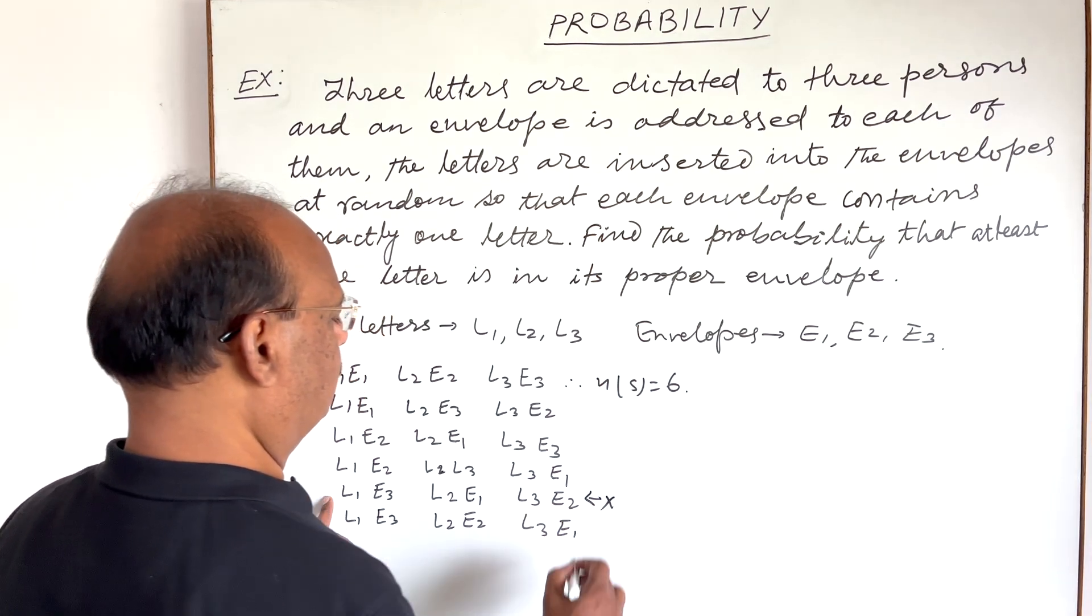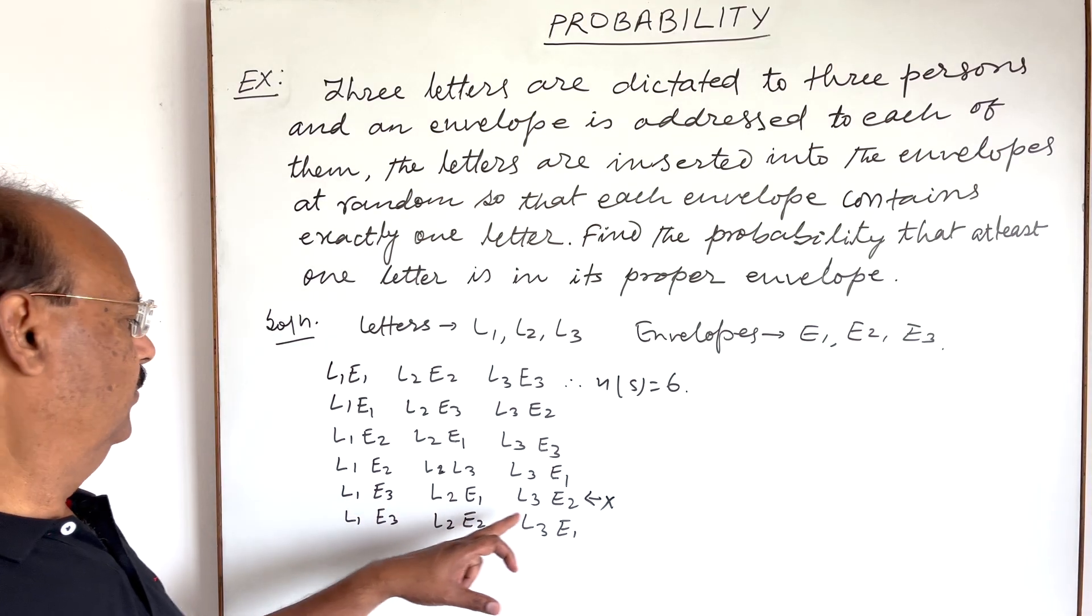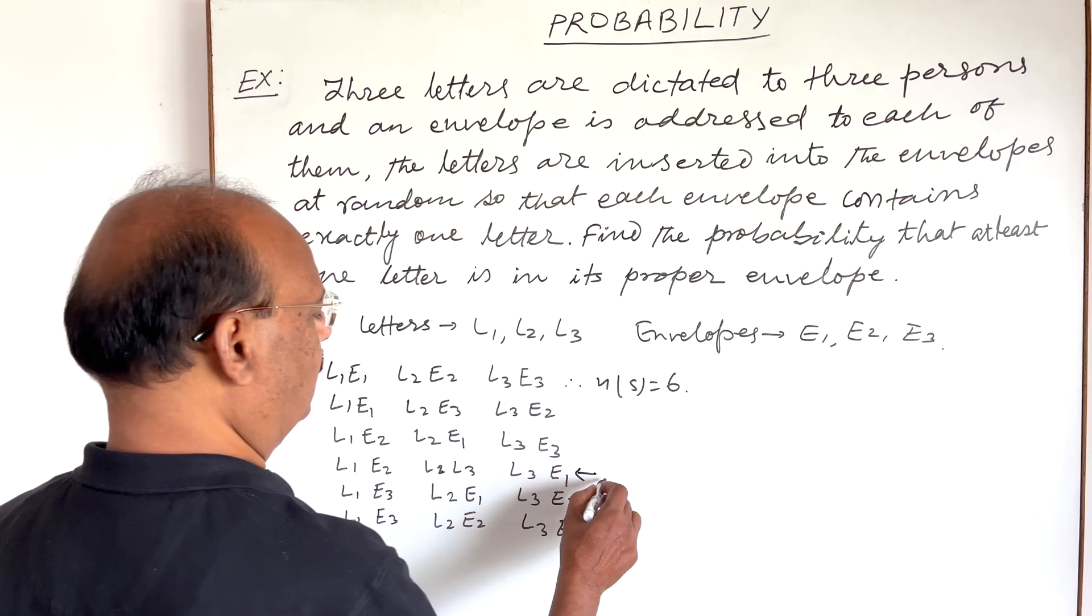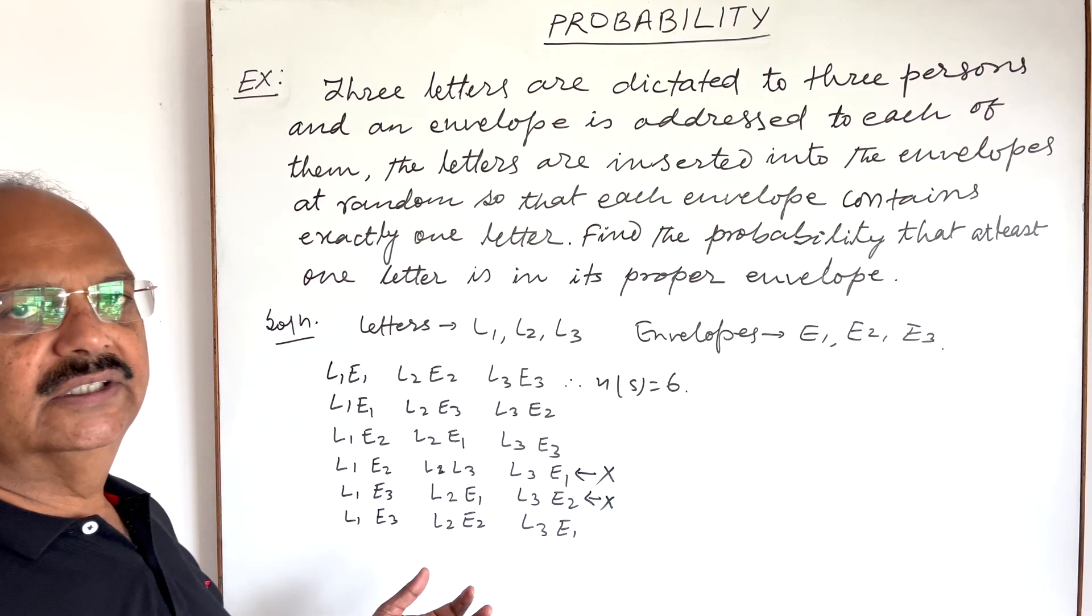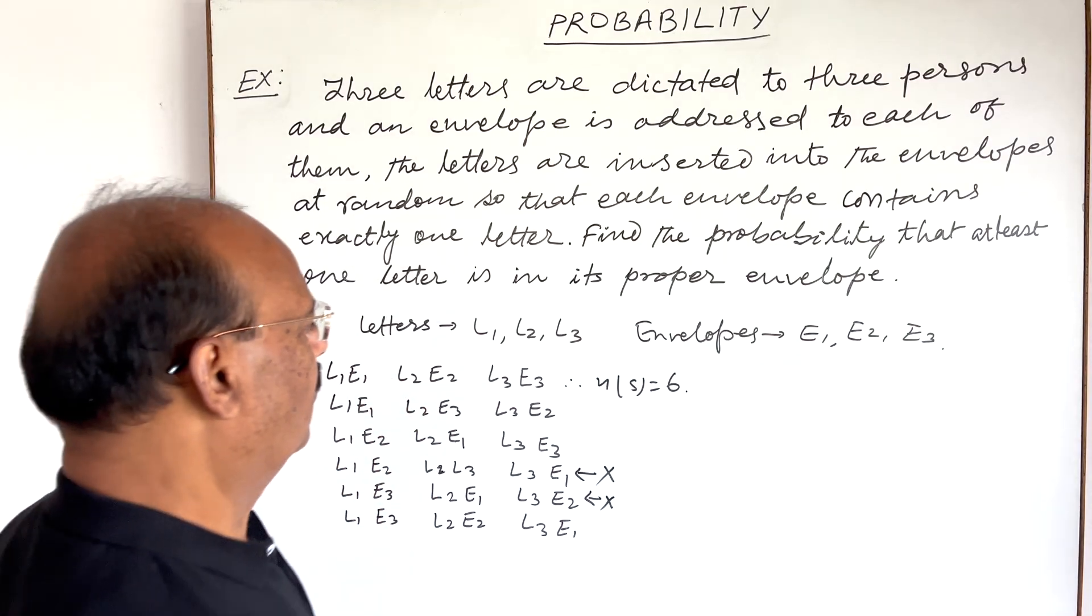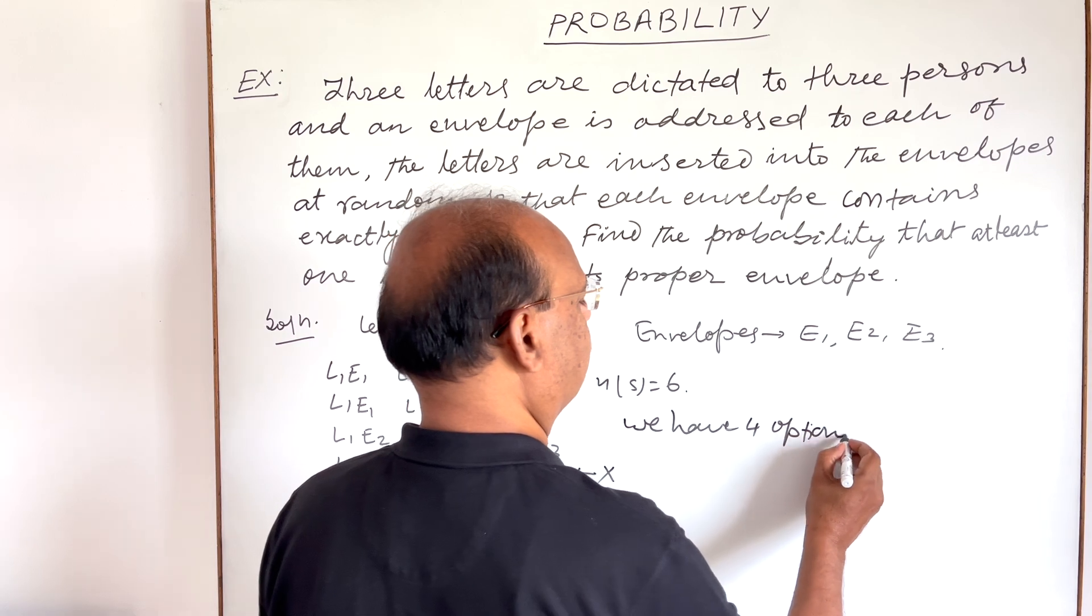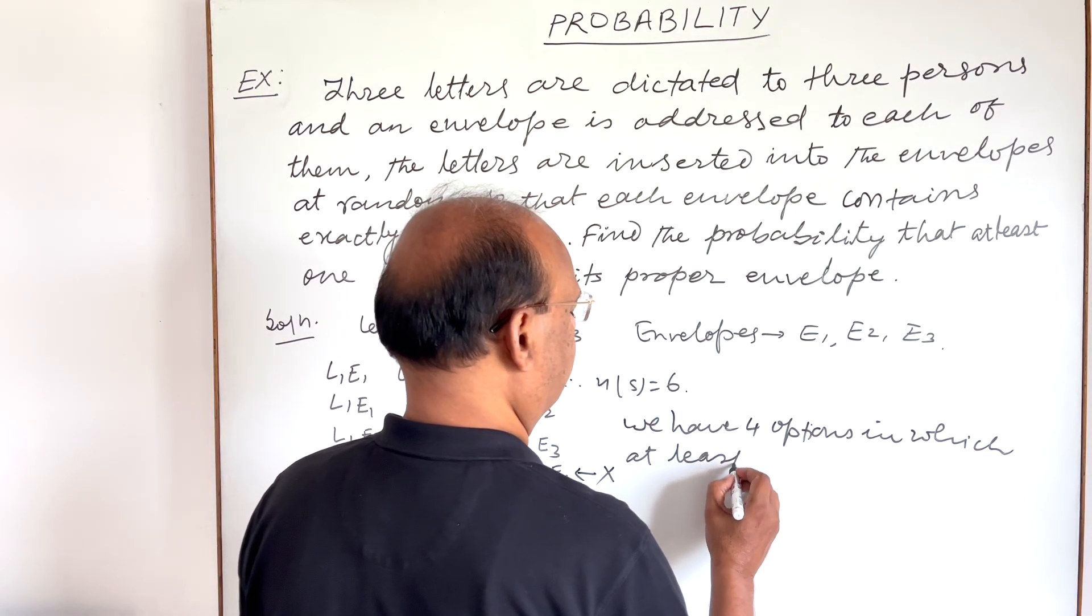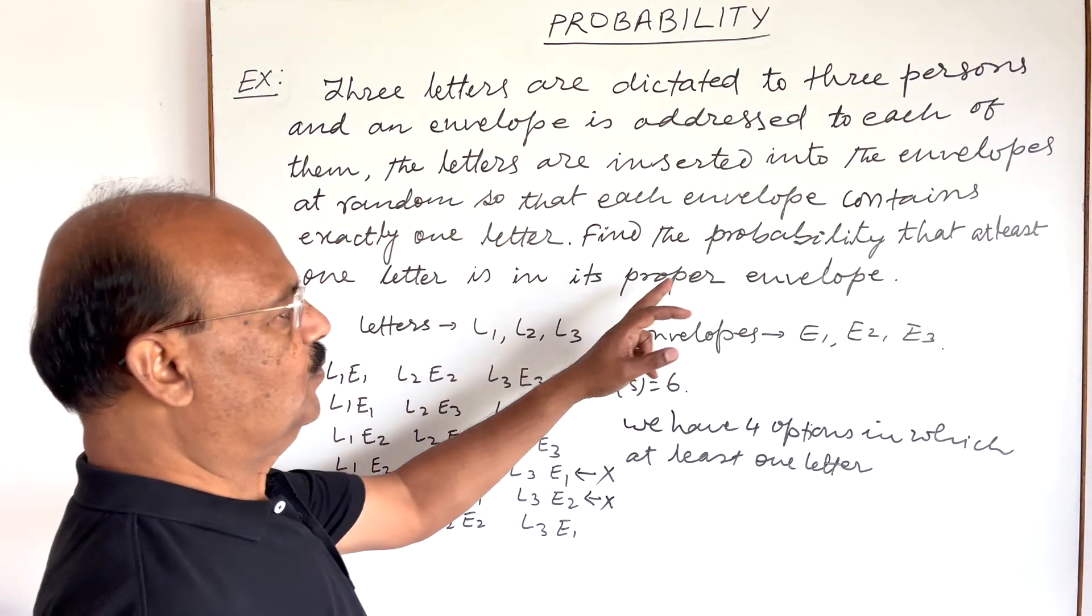Those cases have to be rejected. You can see this case where all letters are in incorrect envelopes, and another case where all letters are kept in wrong envelopes. So we have only four options in which at least one letter is in its proper envelope.